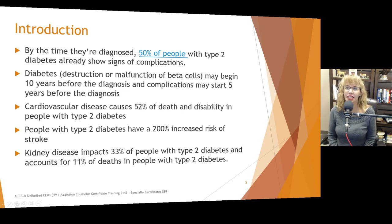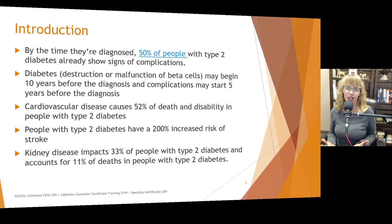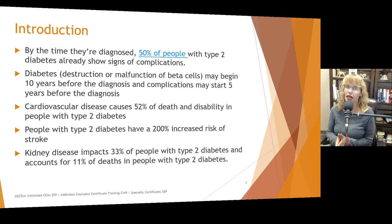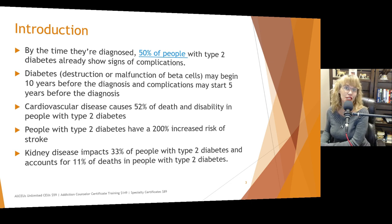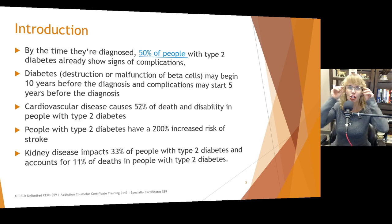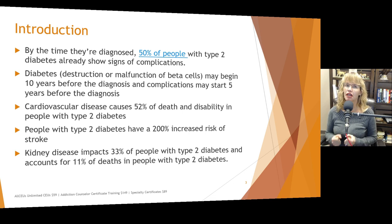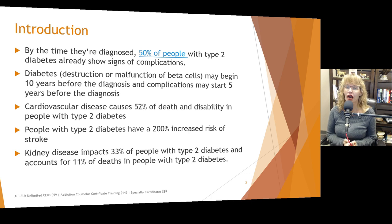By the time they're diagnosed, 50% of people with type 2 diabetes already show signs of complications. Diabetes, which involves the destruction or malfunction of beta cells in the pancreas, may begin 10 years before diagnosis, and complications may start up to 5 years before someone receives a diagnosis. Without rigorous and regular pre-screening, a lot of people develop diabetes and don't even know it.